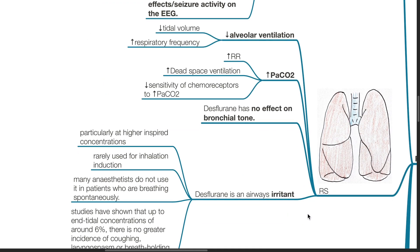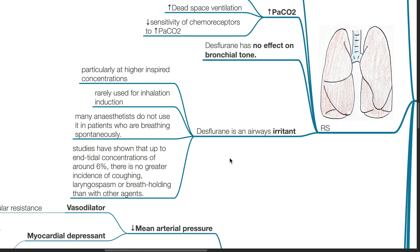Effects on the respiratory system. There is a decrease in alveolar ventilation, decrease in tidal volume, and increase in respiratory frequency. PaCO2 increases as respiratory frequency increases and dead space ventilation increases. There is a decrease in sensitivity of chemoreceptors to PaCO2 concentrations. Desflurane has no effect on bronchial tone. Desflurane is an airway irritant, particularly at higher inspired concentrations, and is rarely used for inhalational induction. Many anaesthetists do not use it in patients who are breathing spontaneously. Studies have shown that up to sub-MAC concentrations of 6%, there is no greater incidence of coughing, laryngospasm, or breath-holding compared with other agents.